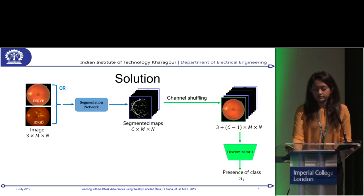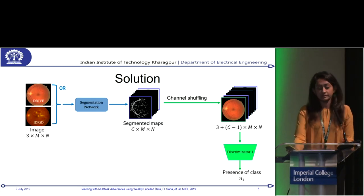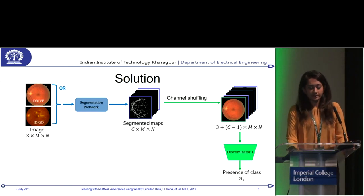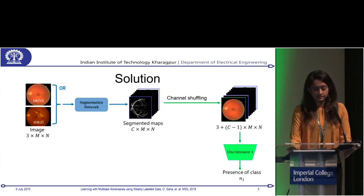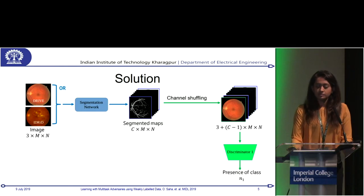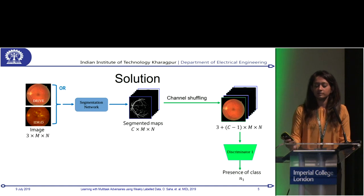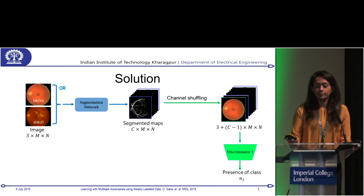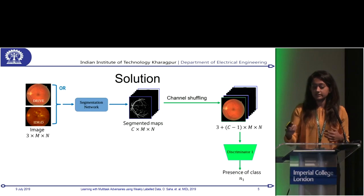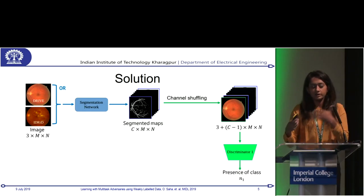Our first discriminator — the novelty in our technique — is Discriminator 1, which tells me whether a class is present in the image or not. For example, the DRIVE dataset has the optic disc present but it's not annotated. So Discriminator 1, irrespective of the annotations, will tell me that DRIVE has the optic disc present. This helps me learn a class from another dataset for the dataset where that class is not annotated.